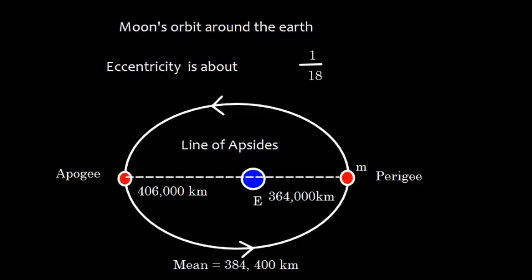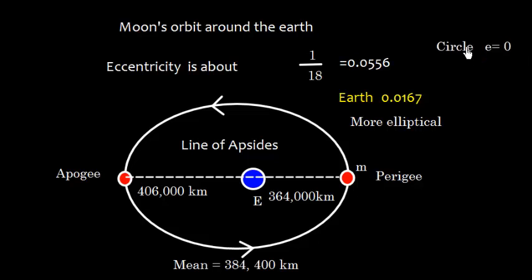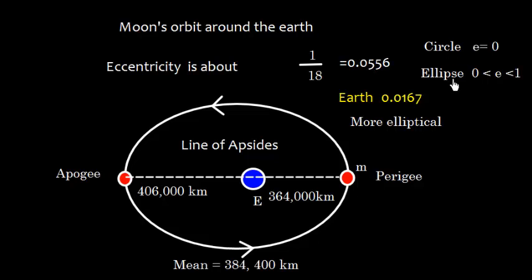The Moon's orbit around the Earth is elliptical with an eccentricity of about 1/18, which is 0.0556. Comparing this to Earth's eccentricity around the Sun of 0.0167, the Moon's orbit is much more elliptical. An eccentricity of 0 means a perfect circle, while values between 0 and 1 indicate increasing deviation from a circle.